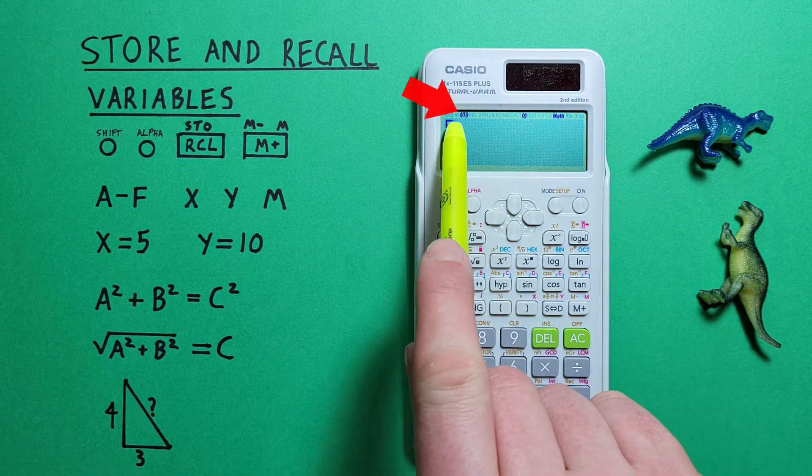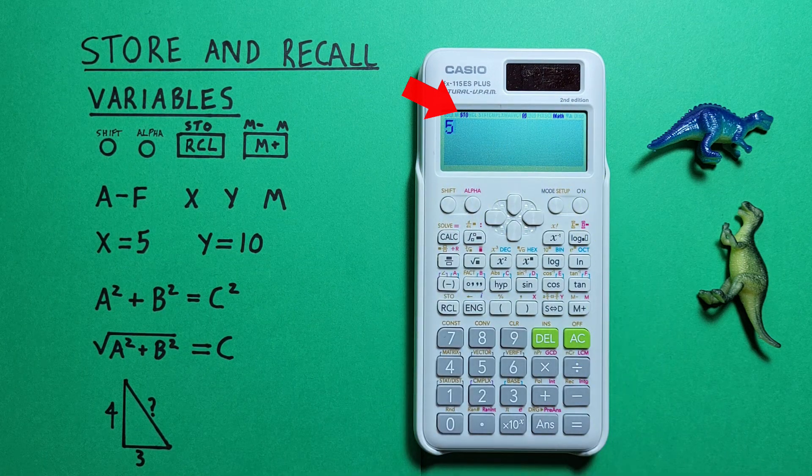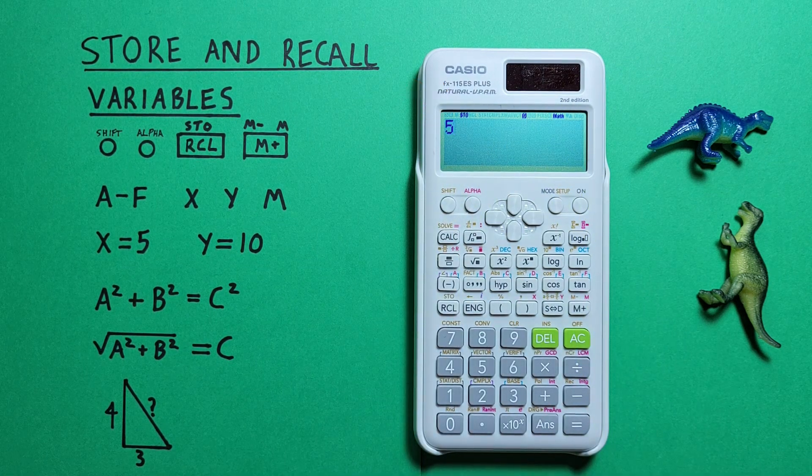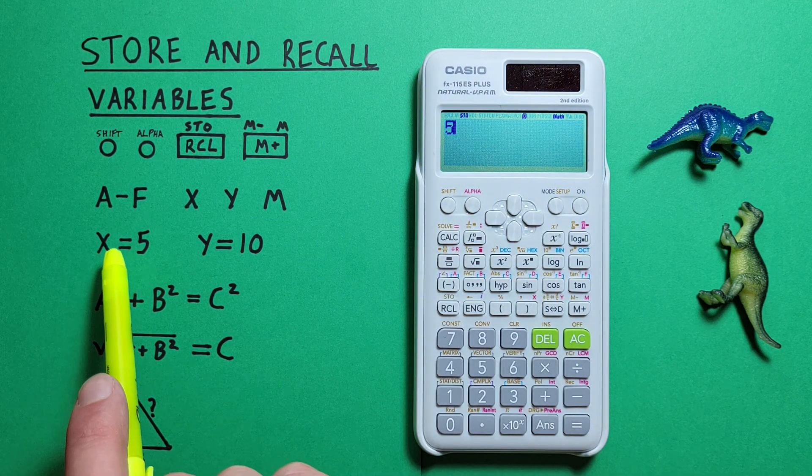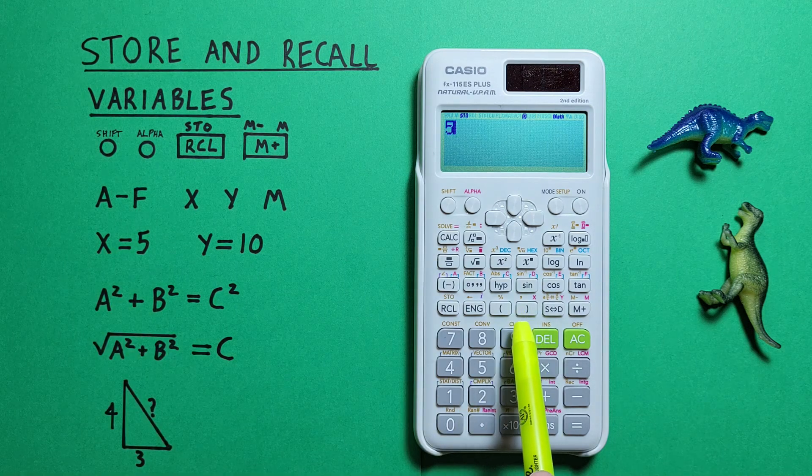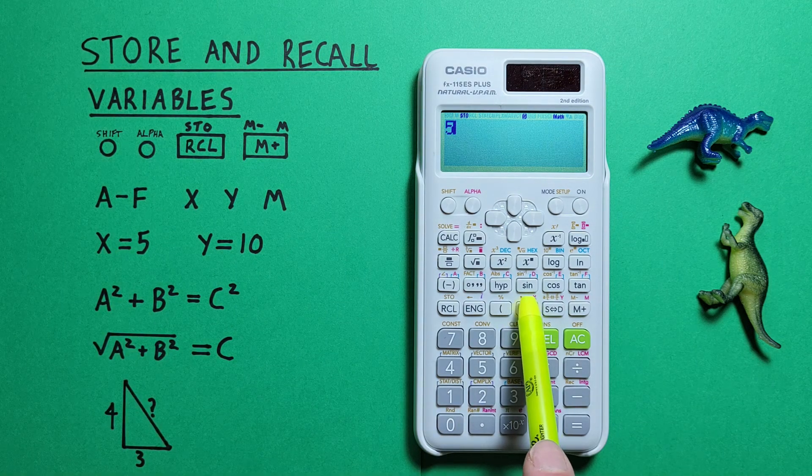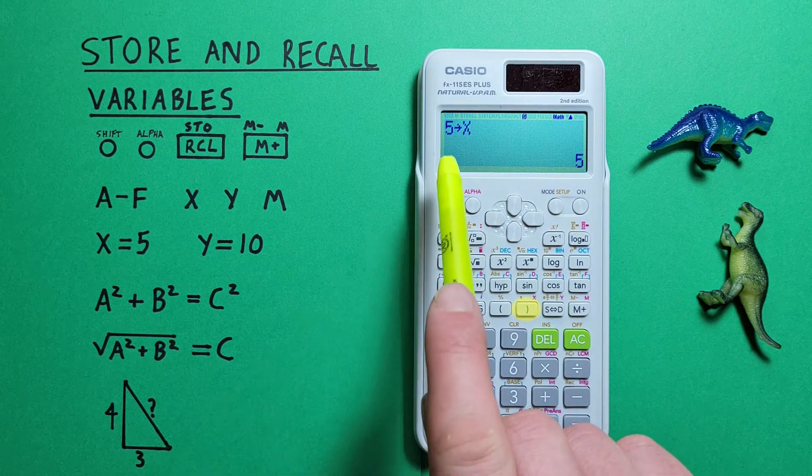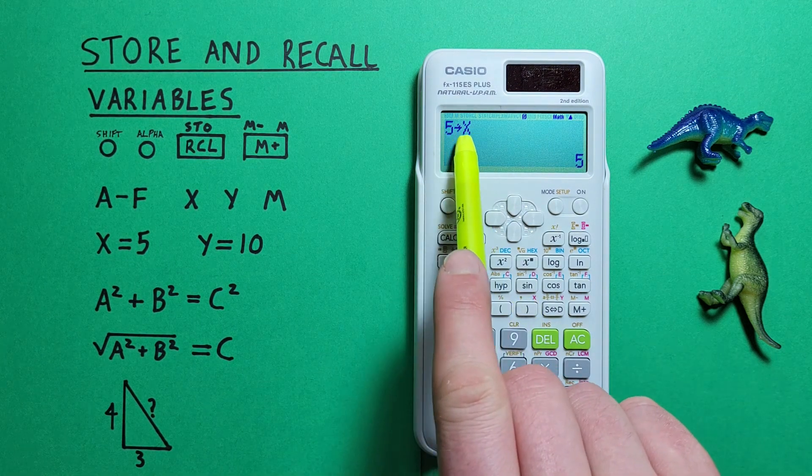We see STO appear on our screen and now we choose a memory slot. So let's store this into X. We select the right bracket here with the alpha function of X and now we see we've stored 5 as X in our calculator.